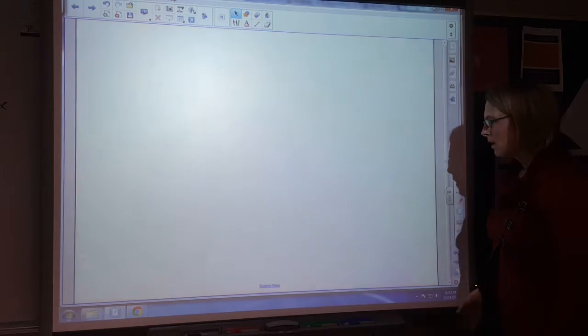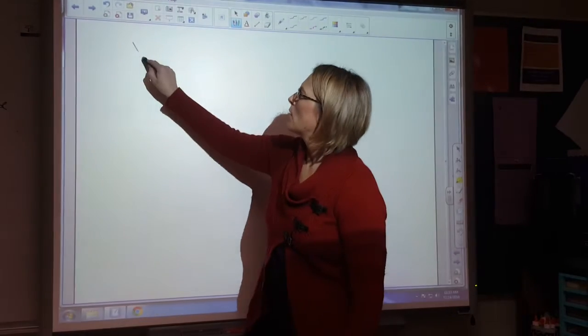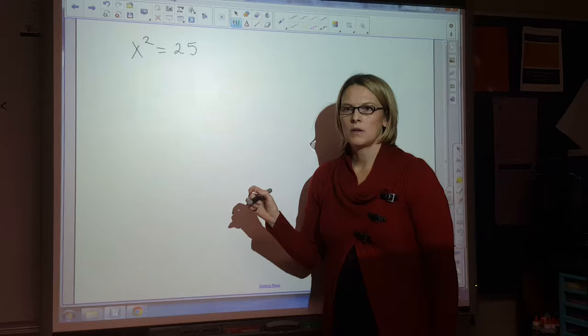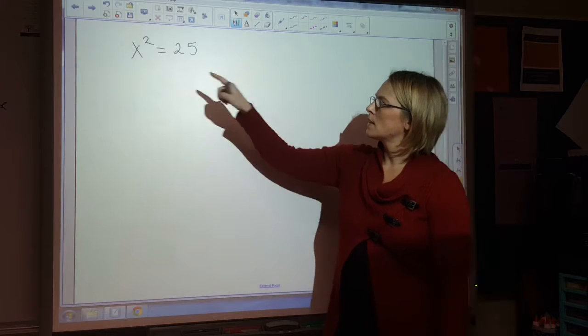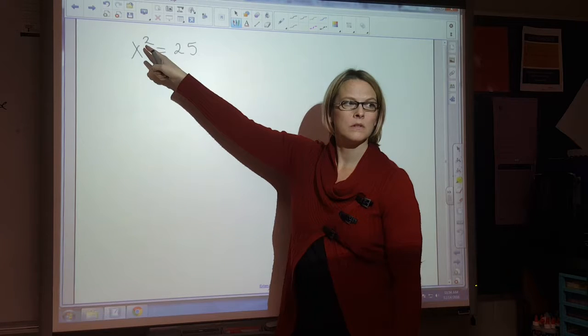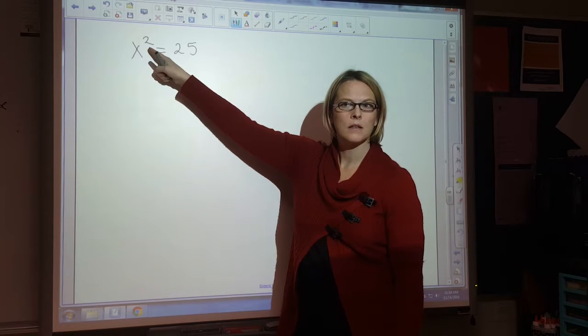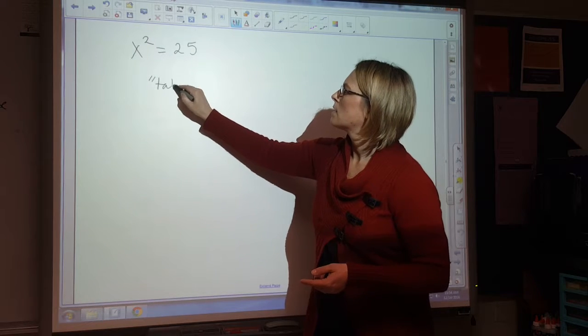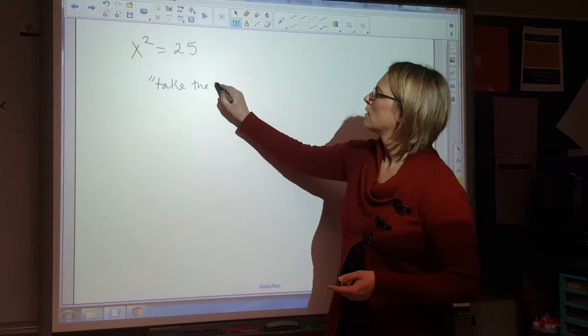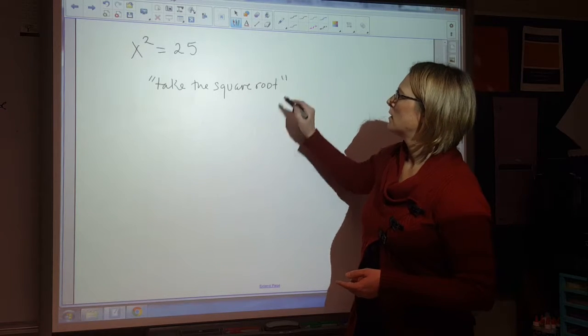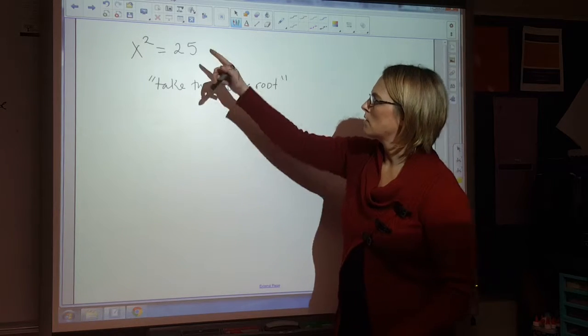If I had x squared equals 25, the operation I'm going to use to isolate the x is to undo the squared. So if I undo the squared, does anybody know what you do? Take the square root. That's right, so you're going to take the square root and that's going to undo it. That's the inverse of squaring.